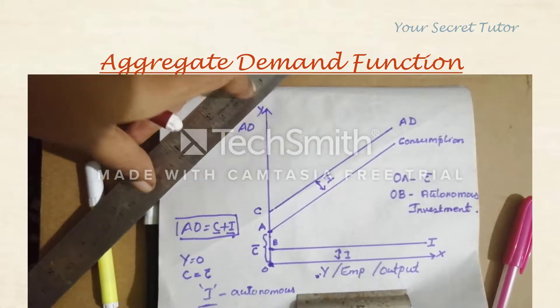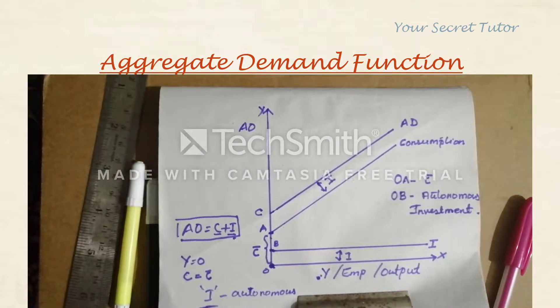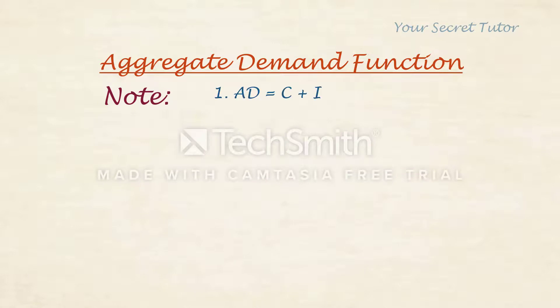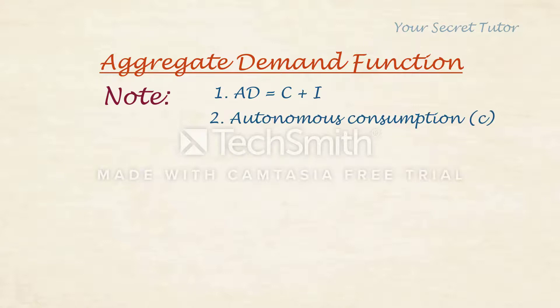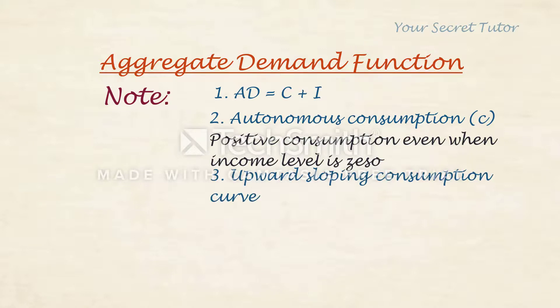To note the theoretical point: Aggregate Demand equals Consumption plus Investment. Here, autonomous consumption is positive consumption even when the income level is equal to zero — that is why the curve starts on the Y-axis. Autonomous consumption is denoted along the C-axis. The consumption curve is upward sloping because as income increases, employment level increases and consumption increases.